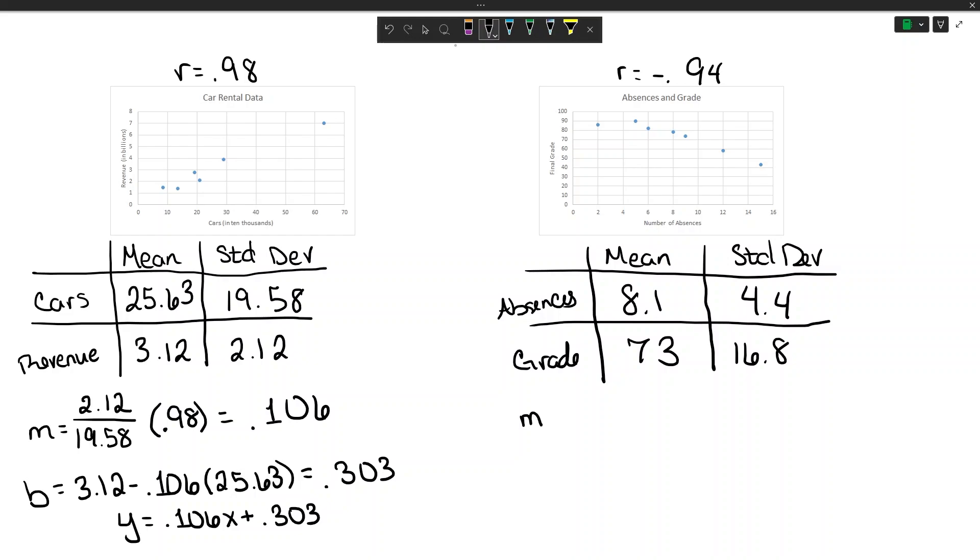If I look at my grades, we divide the standard deviations, we do y divided by x, so 16.8 divided by 4.4 times the value of r which is negative 0.94.